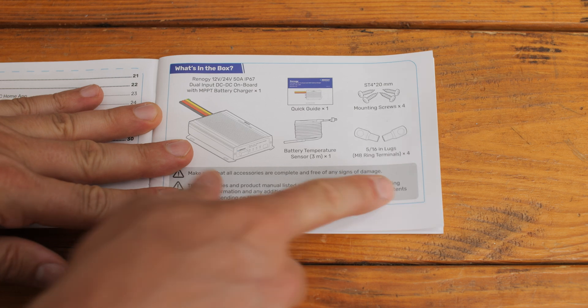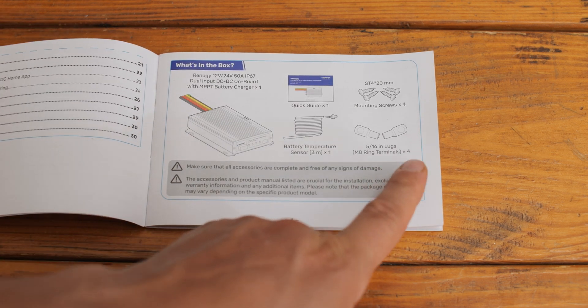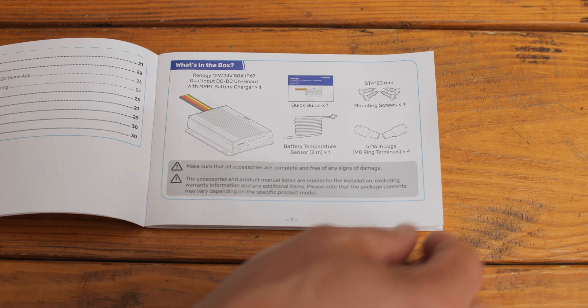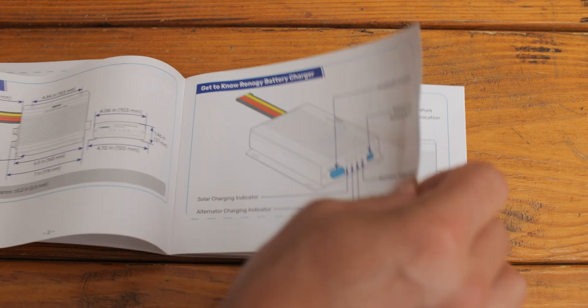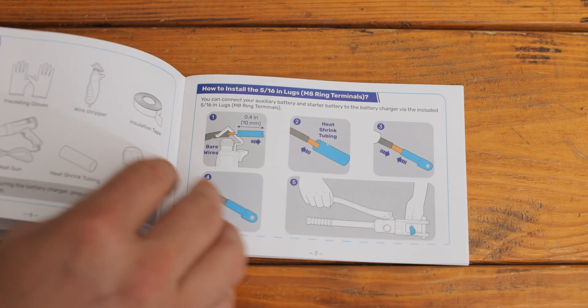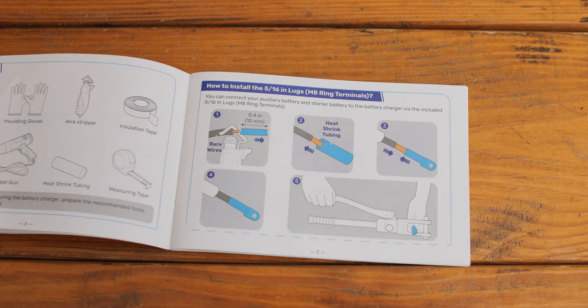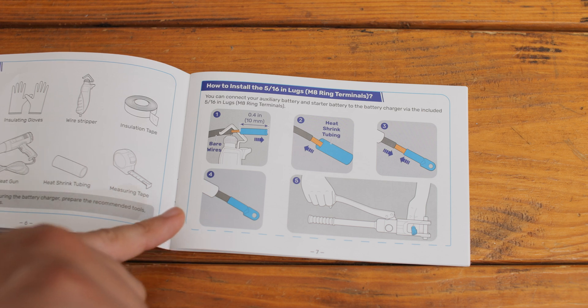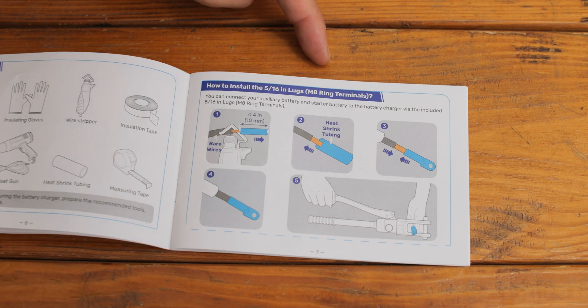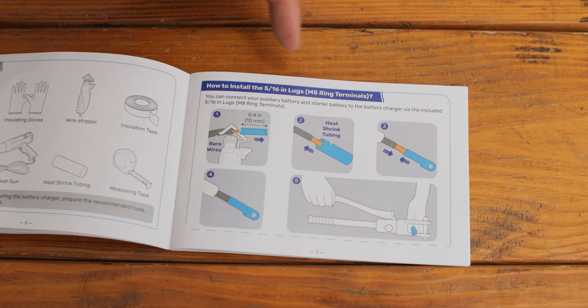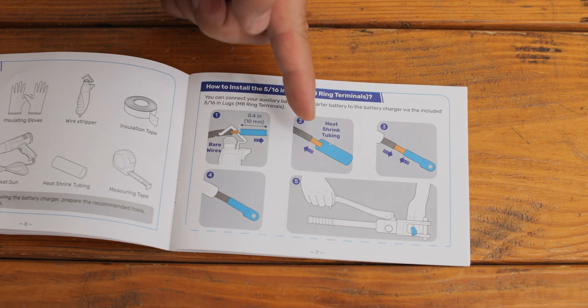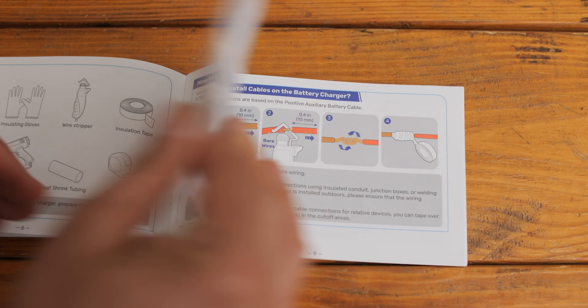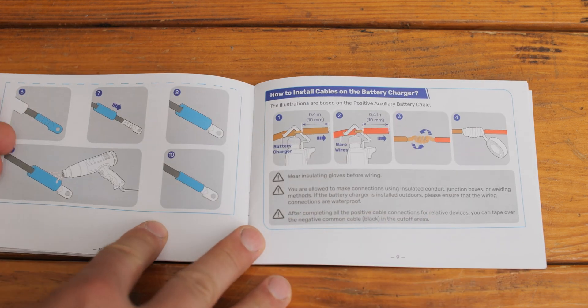You can see that it comes with some lugs - 5/16 M8 terminals. Keep that in mind. I don't think it's coincidental that this is a black wire. It shows the M8 terminals being used on the black cable. Let's keep that in mind and then it shows how to install it.